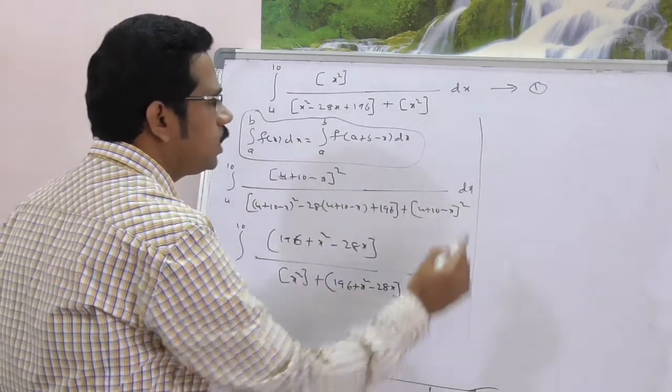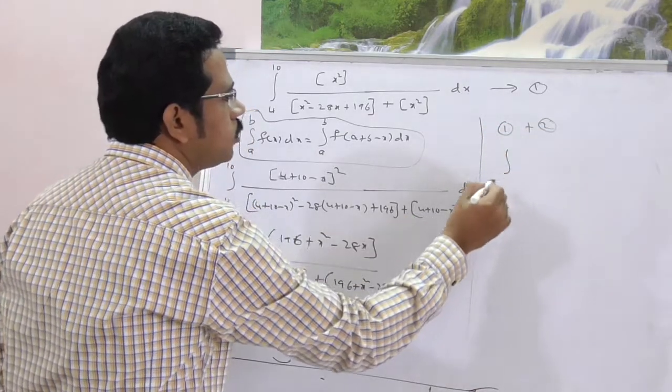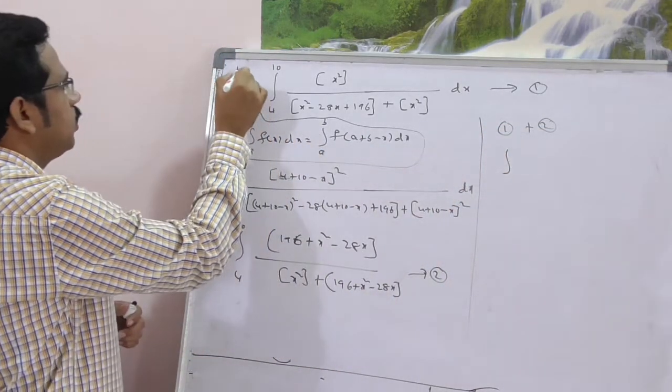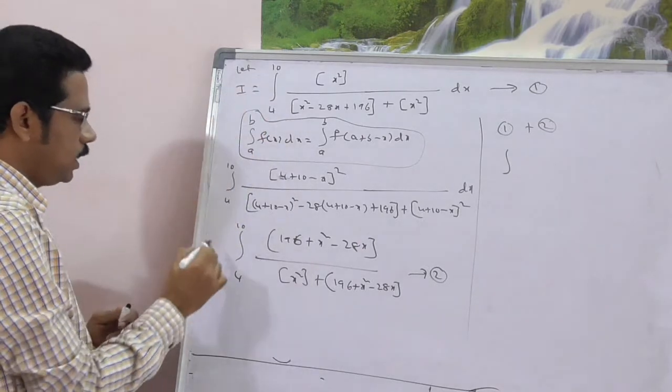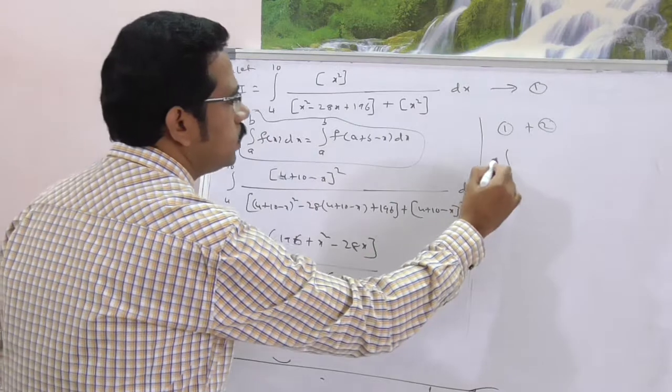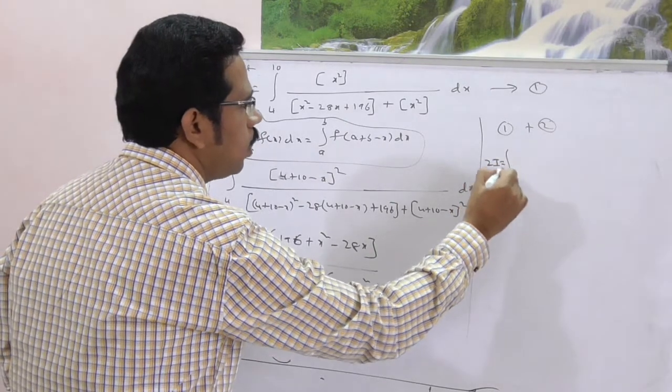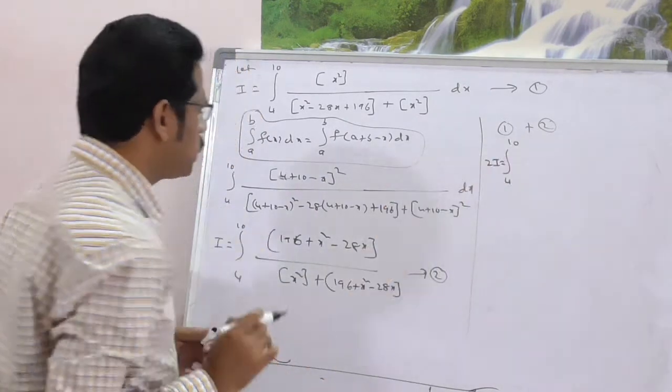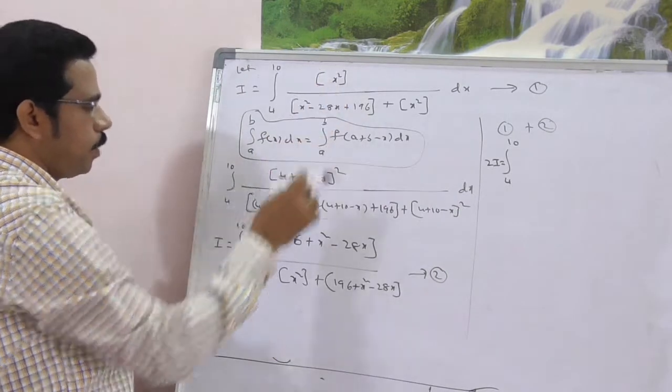Now, add 1 and 2. Let it be i in the first step. Choose it as i. i plus i, this is 2i. 2i is equal to integral 4 to 10. Just observe here, x square plus this.